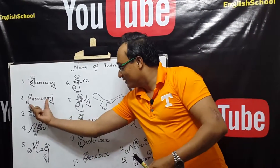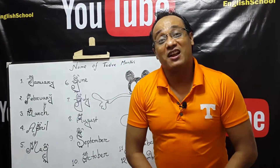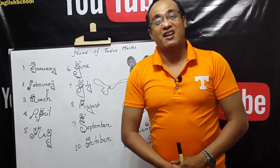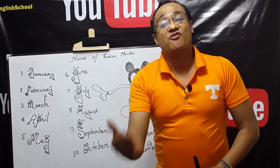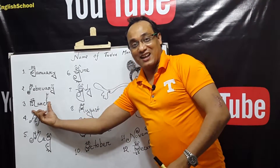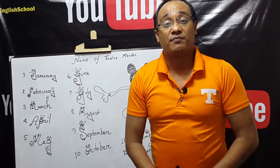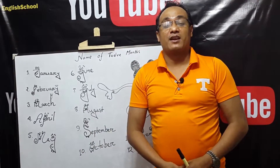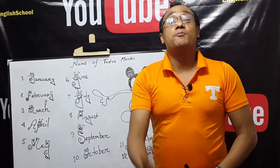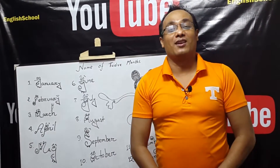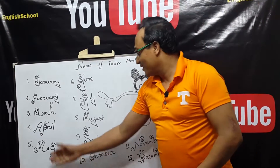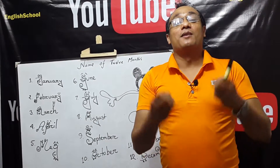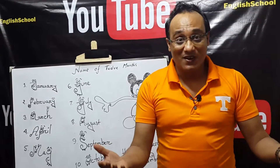Number two: February. Number three: March. Number four: April. Number five: May.